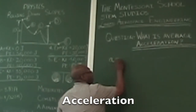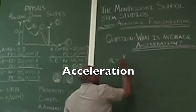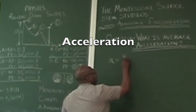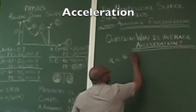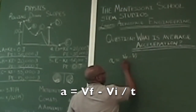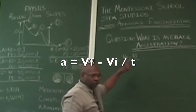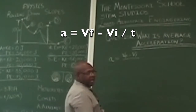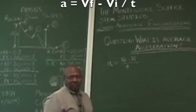B. Now this velocity, I'm going to put a VF. Minus this velocity, I'm going to put a VI. The VF represents final velocity, and the I represents initial. This is over T — what is T? Time.